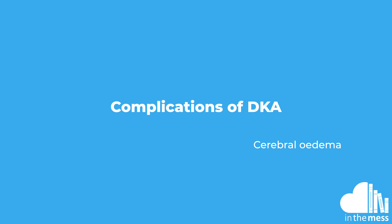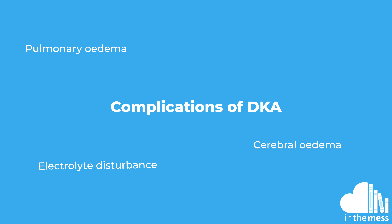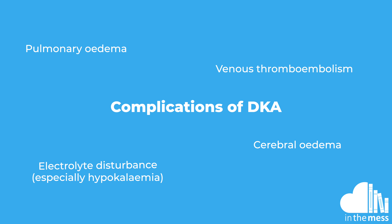Complications of DKA include cerebral oedema, pulmonary oedema, electrolyte abnormalities such as hypokalaemia — as they will often be very, very potassium deficient — or venous thromboembolism due to hyperviscosity. Your patients will need regular monitoring including biochemistry to ensure that these complications don't occur.